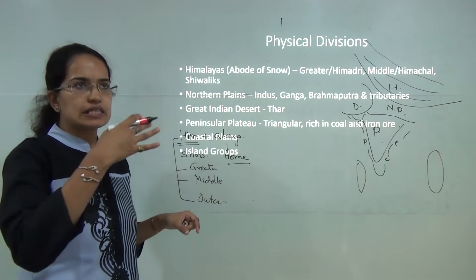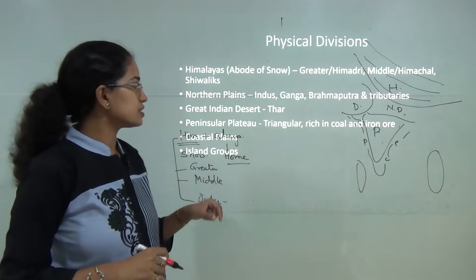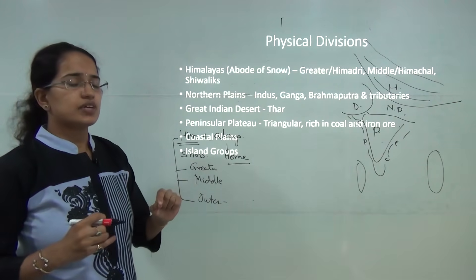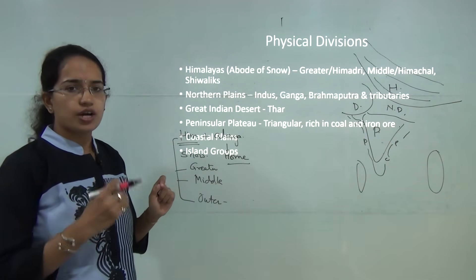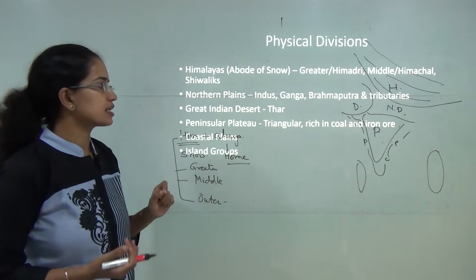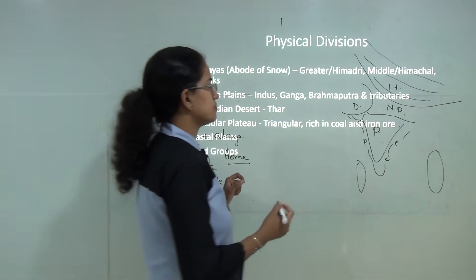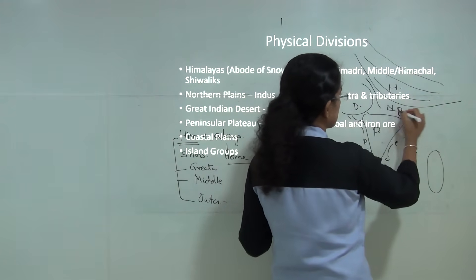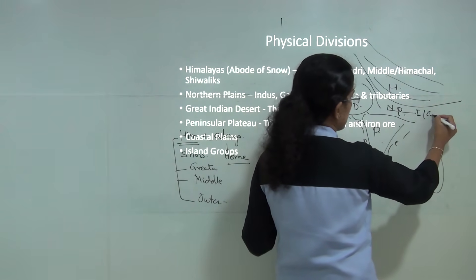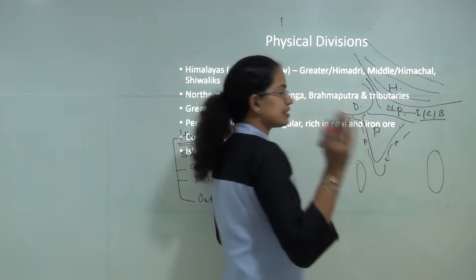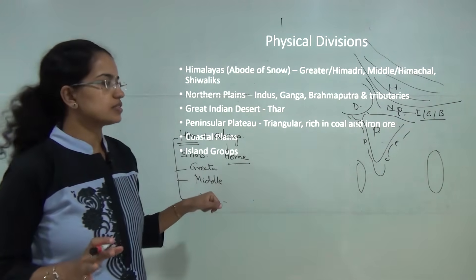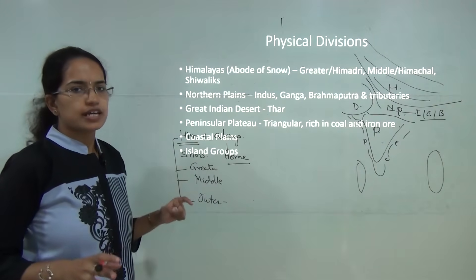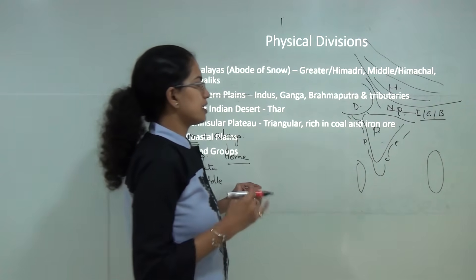The Great Indian Desert, mainly the Thar Desert, lies in the western regions of Rajasthan — mainly the Jaisalmer, Jodhpur, and Barmer regions — and is characterized by arid, dry, and hot weather conditions. The Northern Plains include three major rivers: the Indus, the Ganga, and the Brahmaputra, along with their tributaries. This is considered one of the most fertile belts of India.